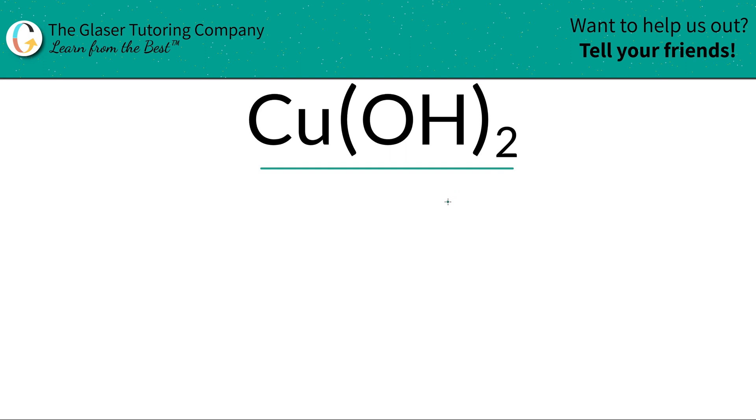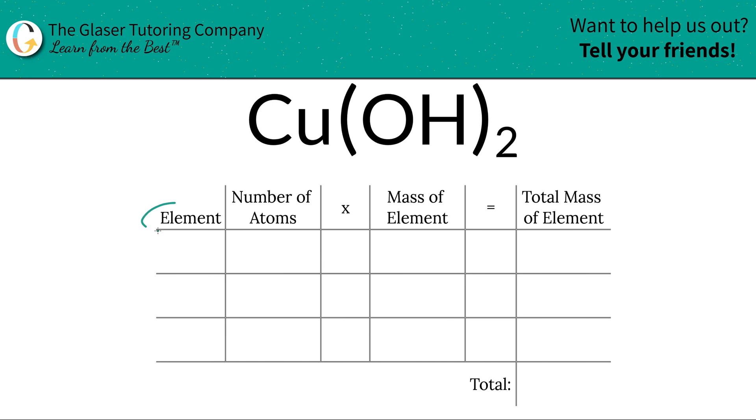I've made a little table to help us organize our thoughts. So the first thing we're going to do is write down the elements we see in the compound. So we have copper, we have oxygen, and we have hydrogen.